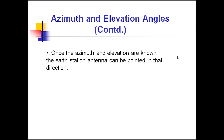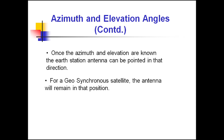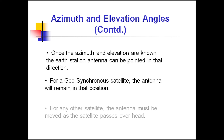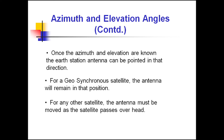Once the azimuth and elevation angles are known, we can keep the antenna in that particular position. For geostationary satellites, the antenna remains in that position and there is no need for frequent adjustments or tracking — you can fix the antenna on Earth. For any other satellites, the antenna must be moved as the satellite passes overhead, so tracking of the antenna is required.